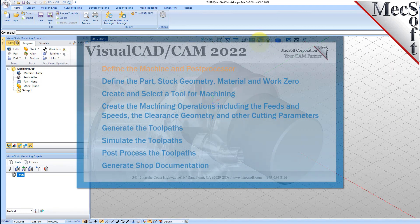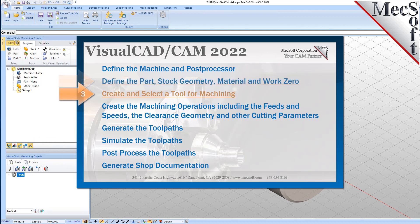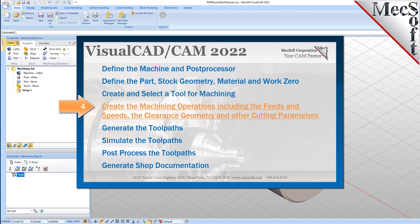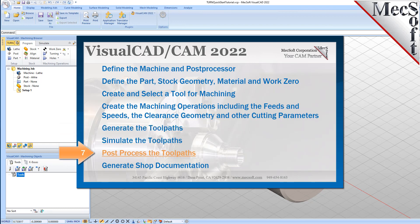We will perform the following basic steps in machining this model. First, we will define the machine and the post-processor to use. Then, we will define the part and the stock geometry, material, and work zero. Then, we'll create and select a tool to use for machining. We'll create the machining operations, including the feeds, speeds, the clearance geometry, and other cutting parameters. Then we'll generate the toolpaths, simulate the toolpaths, post-process the toolpaths, and then generate shop documentation.